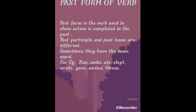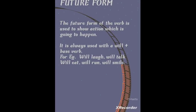Now let us go to the last form, which is the future form. This is very simple — you just use the word 'will' plus the base form. The future form is used to tell about an action that is going to happen. For example: I will read your comments, I will talk to you, I will eat pizza in the evening, I will run tomorrow, I will smile. So in the future form, remember: will + base verb.